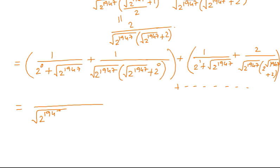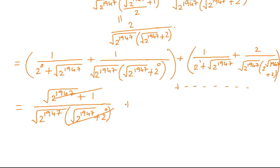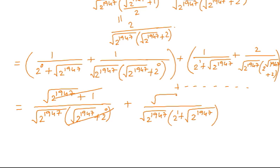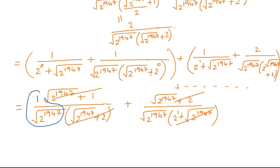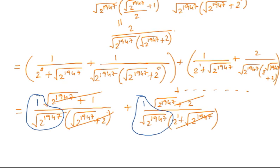Simplifying the first and last term pair, we take LCM as root 2 to the power 1947 times (root 2 to the power 1947 plus 2 to the power 0), and the numerator comes out to be root 2 to the power 1947 plus 1, so the factor cancels. Similarly for the next bracket, the LCM is root 2 to the power 1947 times (2 to the power 1 plus root 2 to the power 1947), and again the numerator is root 2 to the power 1947 plus 2, so the factor cancels again. Every such pair of equidistant terms gives the same constant value of 1 divided by root 2 to the power 1947.